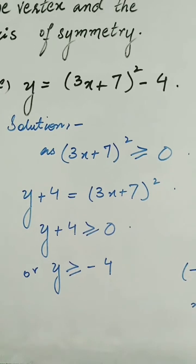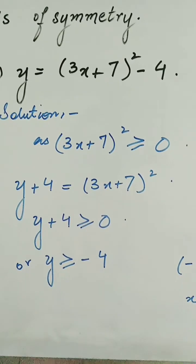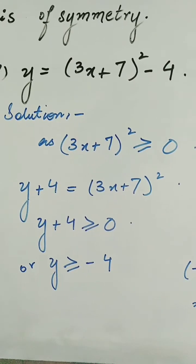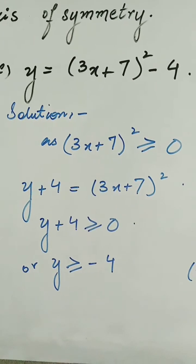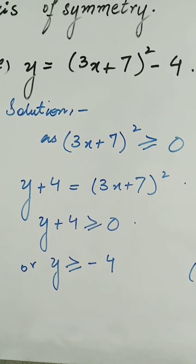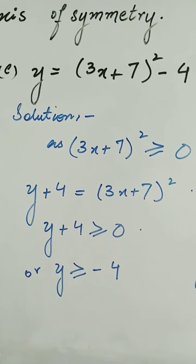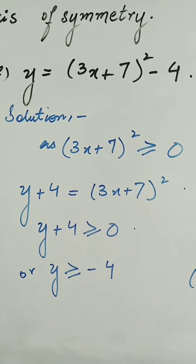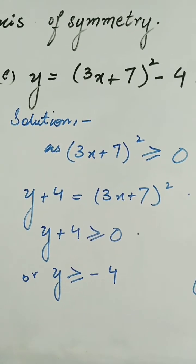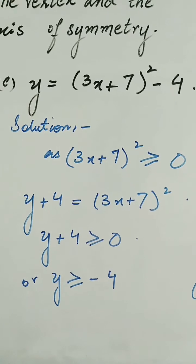Here we have another question: y = (3x + 7)² - 4. As we know this is a complete square form expression, so (3x + 7)² ≥ 0. By writing this equation in the form y + 4 = (3x + 7)², we will have y + 4 ≥ 0, or y ≥ -4.